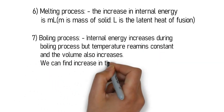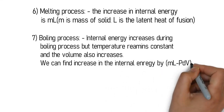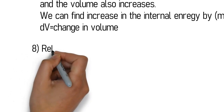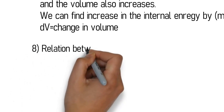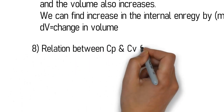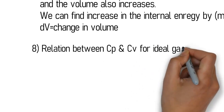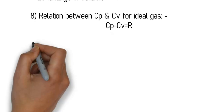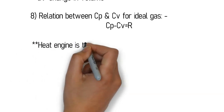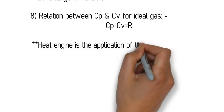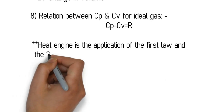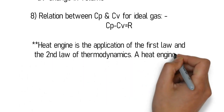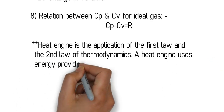Melting process: volume does not change, so ΔU = Q, where Q = mL (latent heat of fusion), and L = Q/m. For the boiling process, volume changes, so Q = mL and work done is always present because volume is changing.